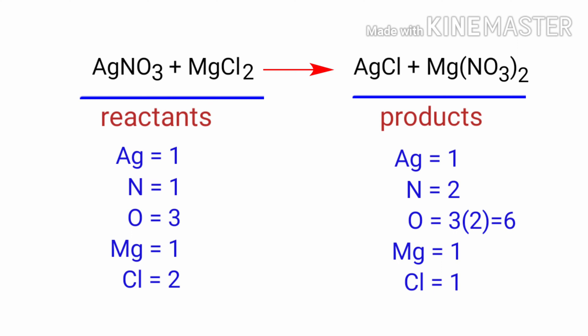On the reactants side, there are one silver atom, one nitrogen atom, three oxygen atoms, one magnesium atom, and two chlorine atoms. On the products side, there are one silver atom, two nitrogen atoms, six oxygen atoms, one magnesium atom, and one chlorine atom.